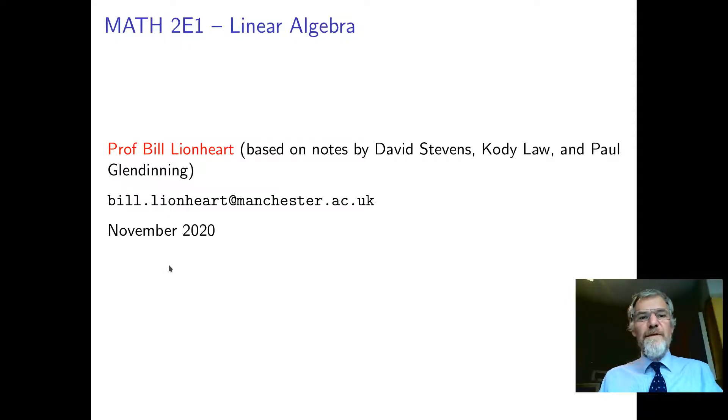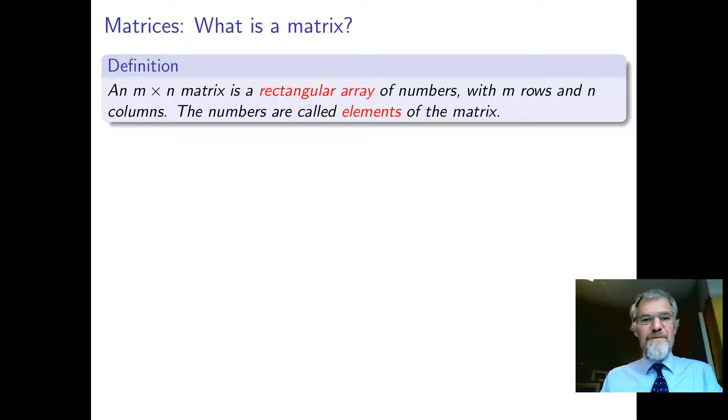Welcome to 2E1 linear algebra section. I'm Bill Lionheart. We're going to talk about matrices. A matrix is a rectangular array of numbers. An m by n matrix has m rows and n columns, and the numbers in it are called elements.